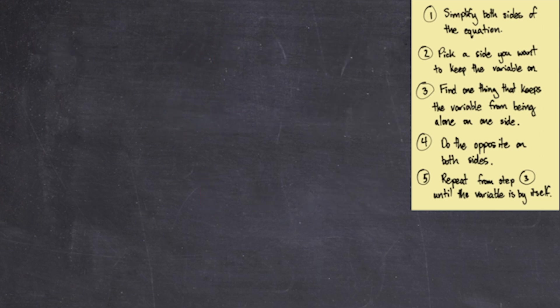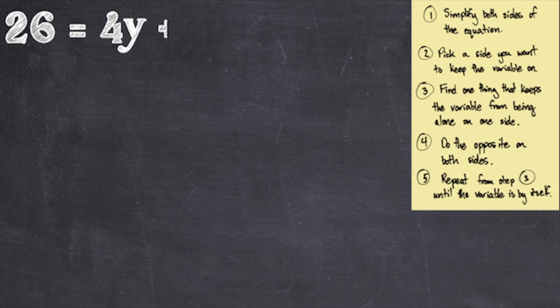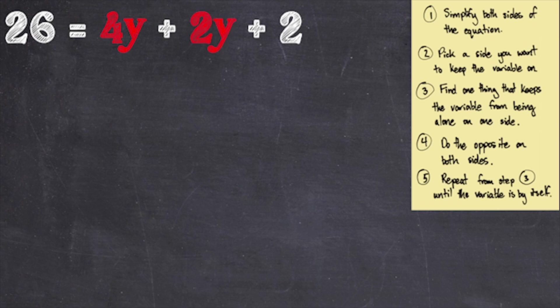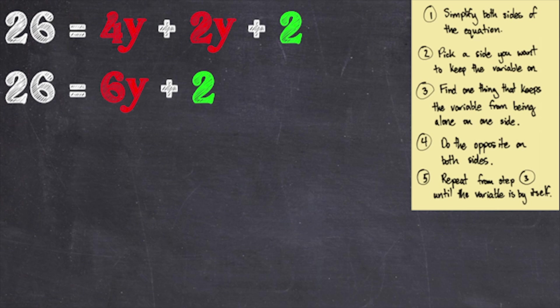Let's move on to a more complicated example. We have the equation 26 equals 4 times y plus 2 times y plus 2. For step 1, let's simplify both sides. On the left-hand side, 26 can't be simplified further. On the right-hand side, 4y plus 2y plus 2 can be simplified — 4y and 2y are like terms, so 4y plus 2y equals 6y. Our equation is now 26 equals 6y plus 2.